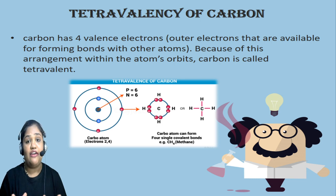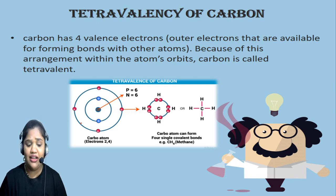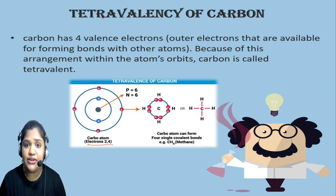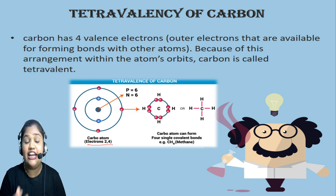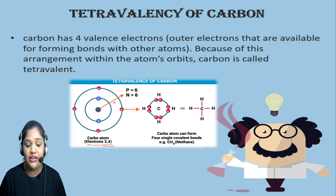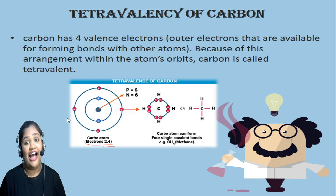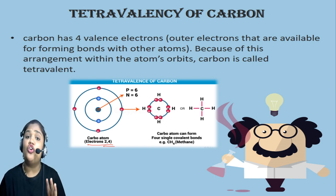Now moving on, we are going to discuss the tetravalency of carbon. On your screen, you can see the electronic configuration of carbon. We calculate electronic configuration using the atomic number. The atomic number of carbon is 6. The electrons are distributed as 2 and 4 — so in the first shell of carbon there are 2 electrons, and in the outermost shell there are 4 electrons. So carbon has 4 valence electrons.